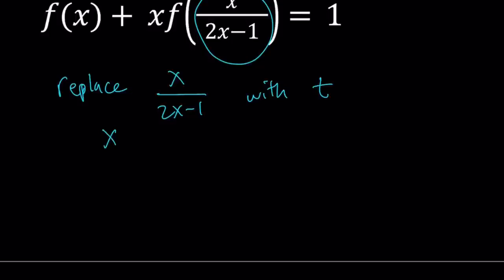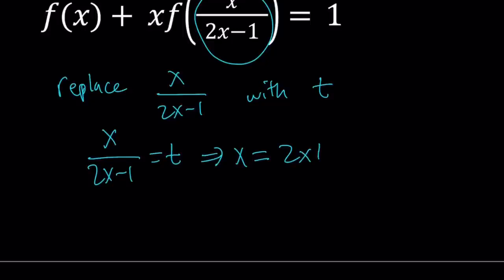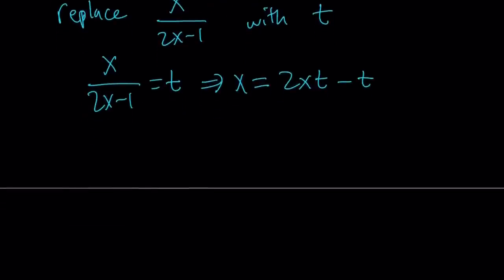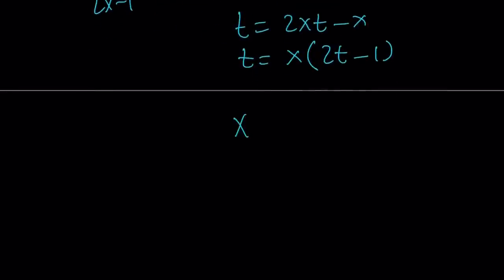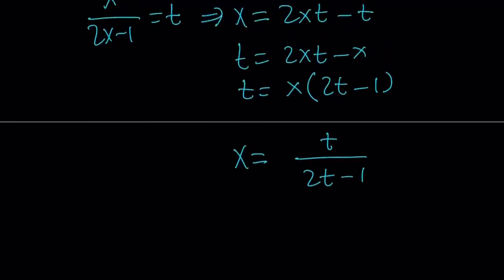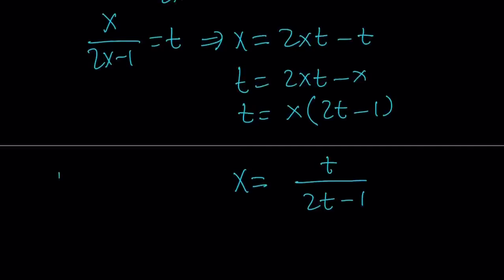Now let's see what that means. x over 2x minus 1 equals t. If you cross multiply, you get x equals 2xt minus t. I want to solve for x, so let's put all the terms that have x on the same side: t equals 2xt minus x. Taking out x gives t over 2t minus 1. So if x over 2x minus 1 equals t, then x equals t over 2t minus 1 — they have the same type of structure.